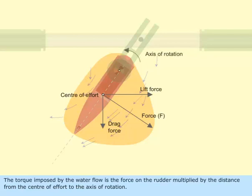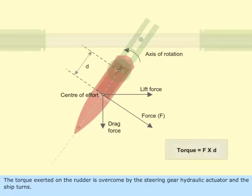The torque imposed by the water flow is the force on the rudder multiplied by the distance from the center of effort to the axis of rotation. The torque exerted on the rudder is overcome by the steering gear hydraulic actuator, and the ship turns.